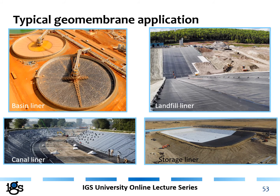The main purpose of a geomembrane is to reduce or prevent the flow of fluid through any type of construction. Typical applications include basin liners, landfill liners or caps, hydraulic engineering applications such as canal liners, storage systems for water or other liquids, mining, tunneling, and any application where a barrier is needed.